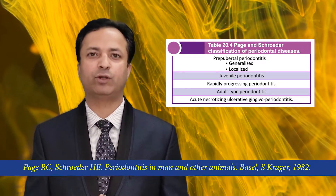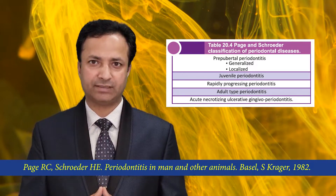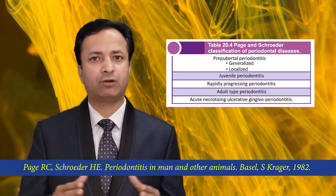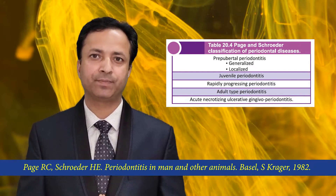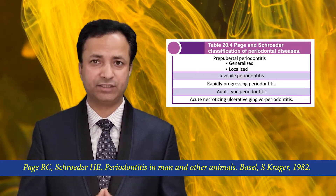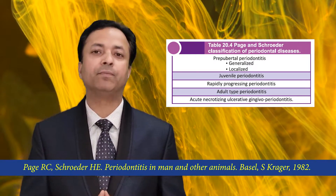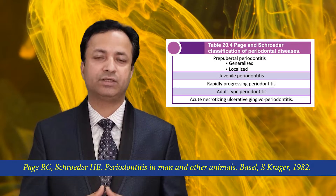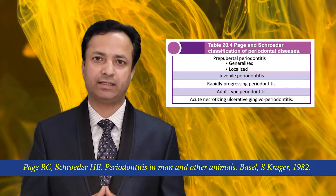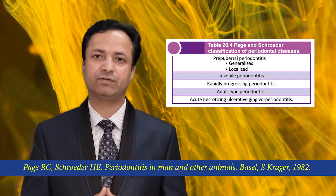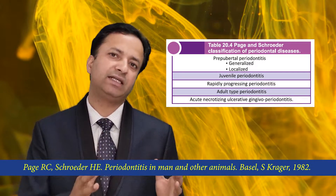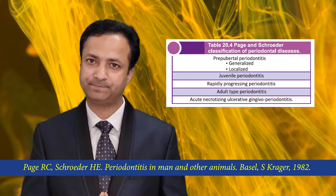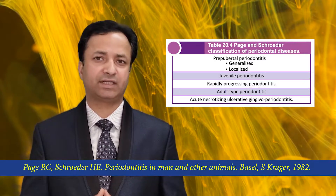Prepubertal periodontitis was described to begin around or after the eruption of the primary dentition. There were two forms: generalized and localized. The generalized form was more acute and aggressive, characterized by inflammation of the gingival margins with clefting. Both the localized and generalized forms were associated with peripheral neutrophilic function defect.